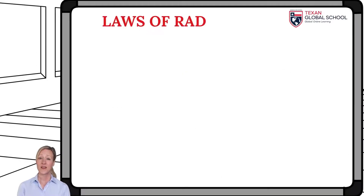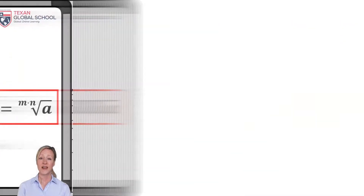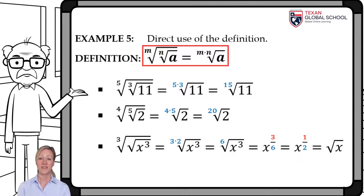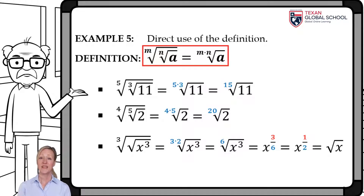The next law of radicals states that the nth root of the nth root of a is equivalent to the product of the indices — that is, the indices are multiplied to simplify to a single root. For example, the fifth root of the cube root of 11, multiplying the indices, simplifies as the fifteenth root of 11. The fourth root of the fifth root of 2 is expressed as the twentieth root of 2. The cube root of the square root of x cubed, multiplying the indices, is represented as the sixth root of x cubed.